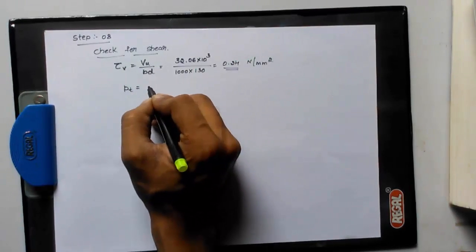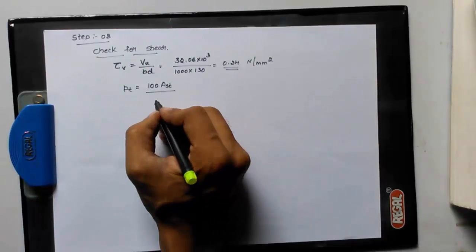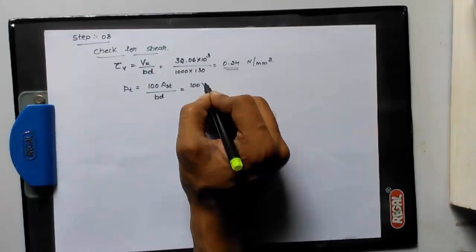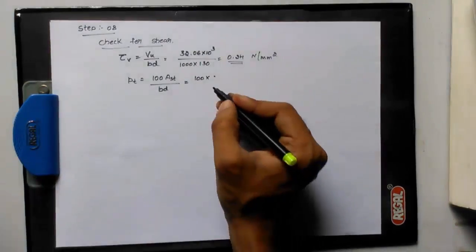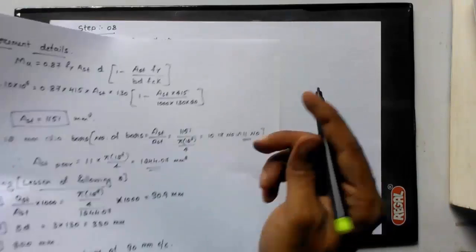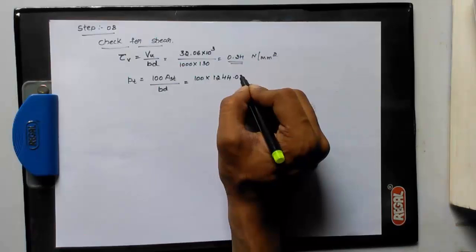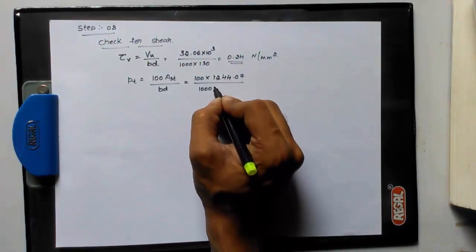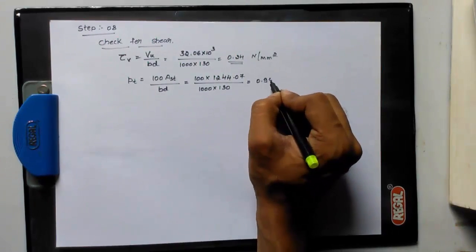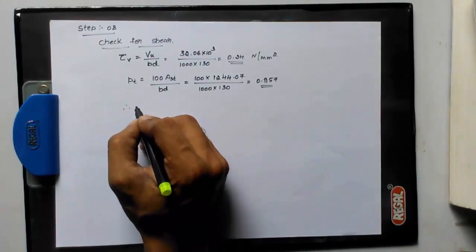Now we need to find out what is the percentage of steel, pt. pt is 100 ast by b into d, equal to 100 into ast, which is 1244.07, divided by b is 1000 into 130. We will get 0.957.